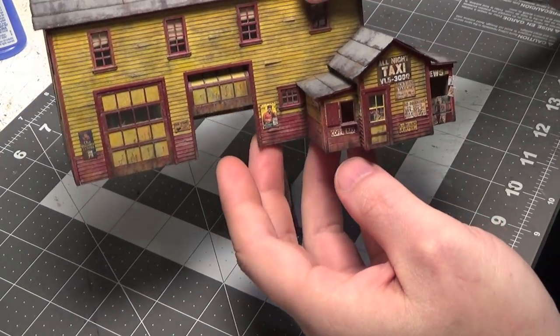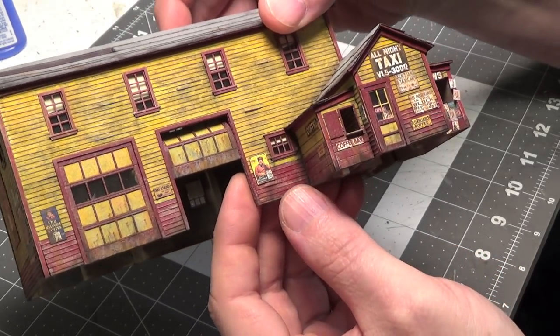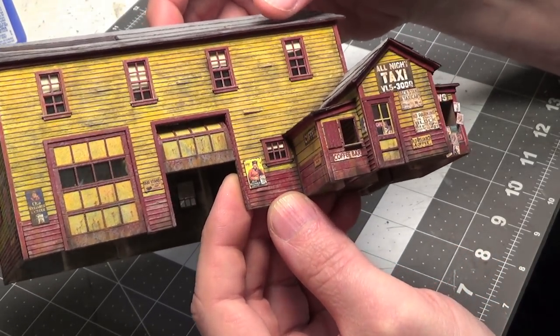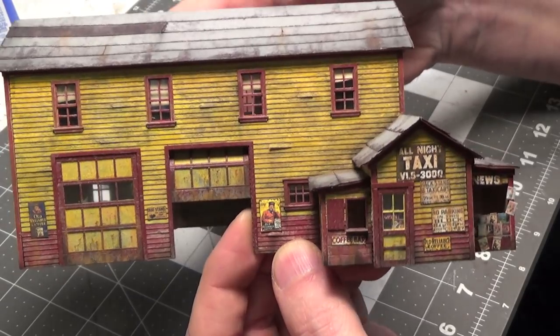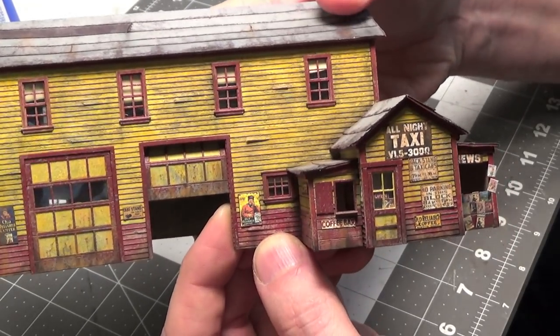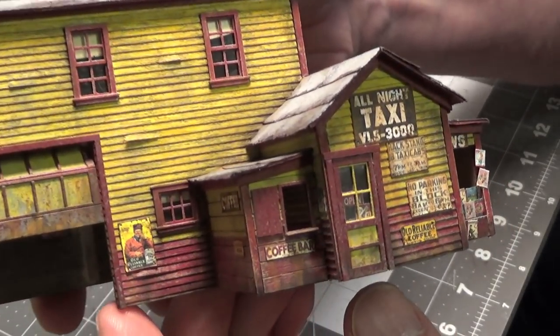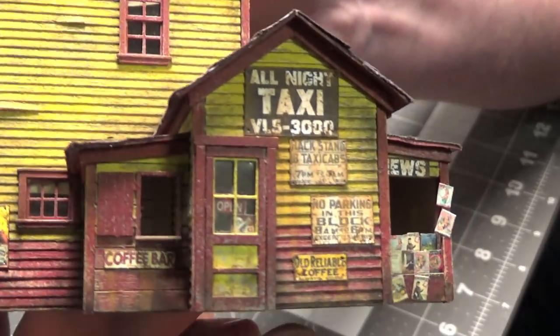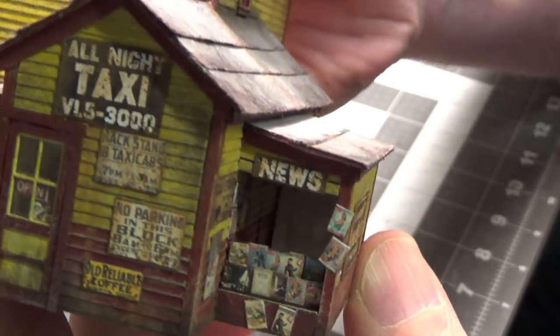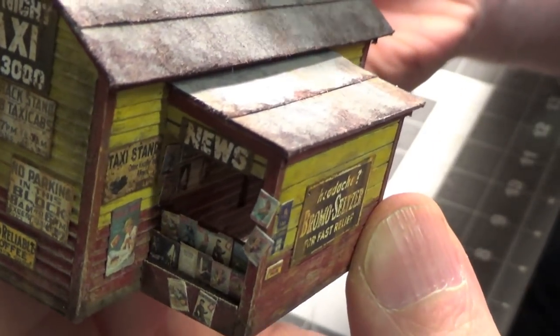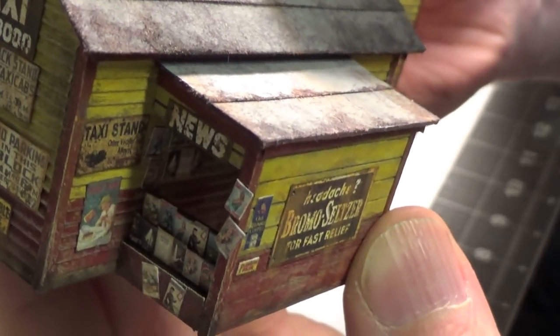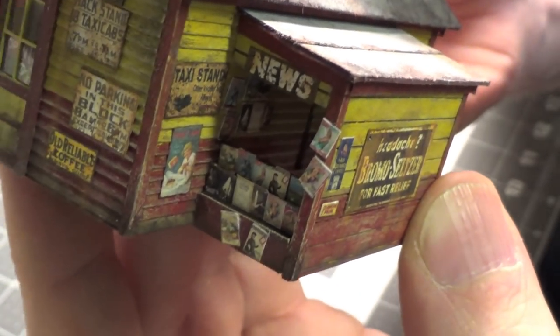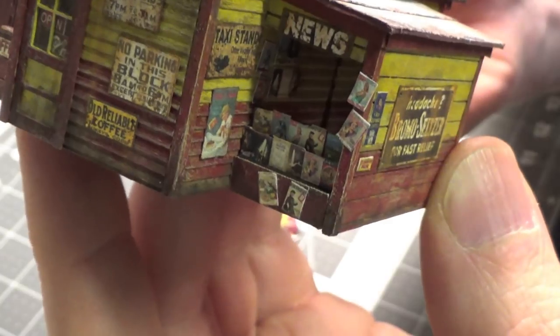So all of the doors are glued in place. I've also added lots of signs. As you can see, there's a little newspaper stand or a magazine stand on the side.